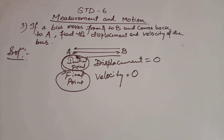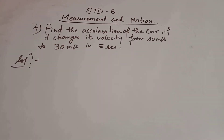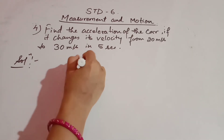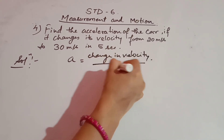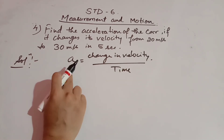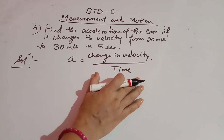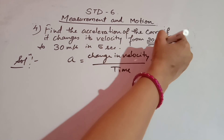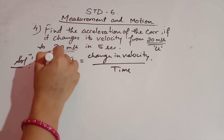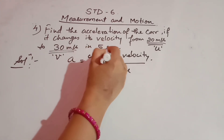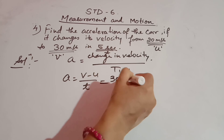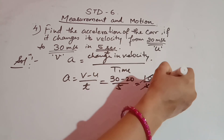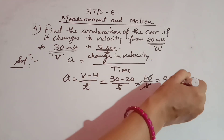In this question, find the acceleration of the car if it changes its velocity from 20 meters per second to 30 meters per second in 5 seconds. Acceleration is the rate of change of velocity, i.e., change in velocity by time. The initial velocity u is 20 m/s, the final velocity v is 30 m/s, and time t is 5 seconds. So a equals v minus u divided by t, which is 30 minus 20 divided by 5, giving 10 by 5 equals 2. The unit of acceleration is meter per second square.